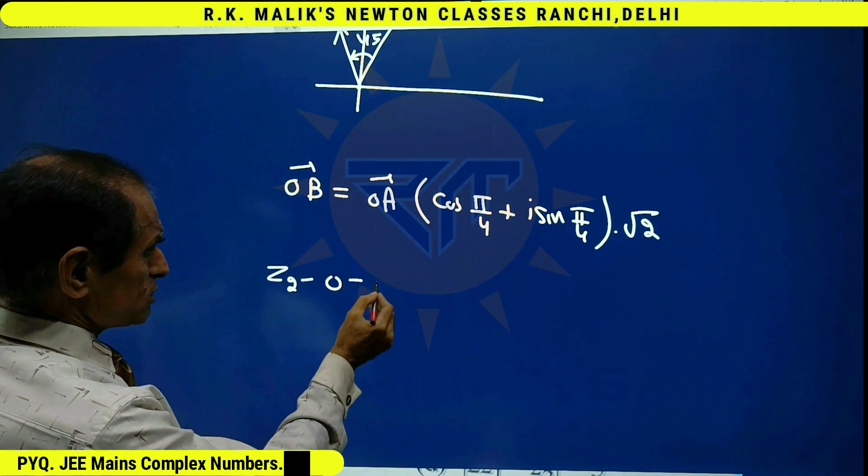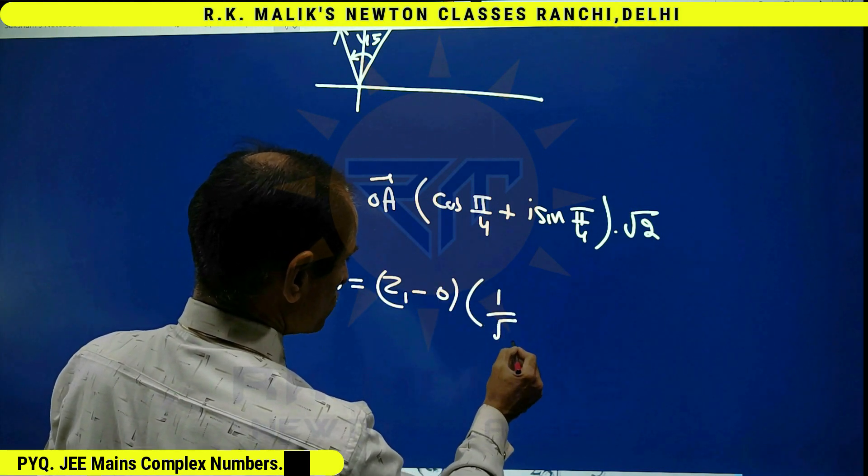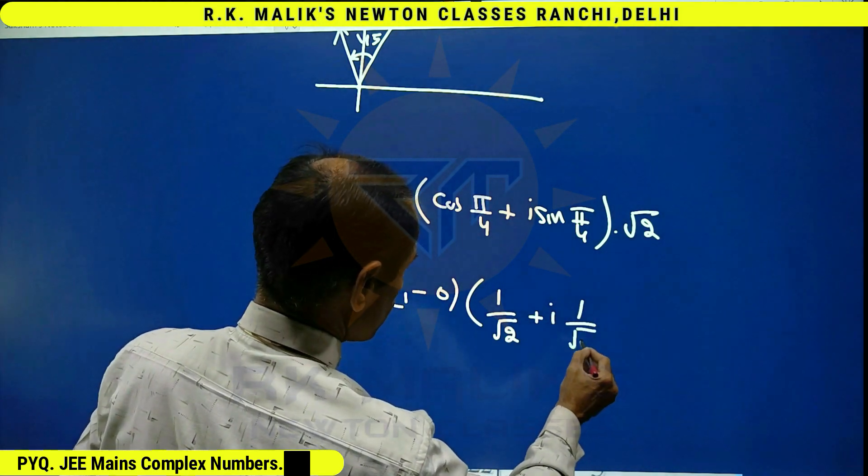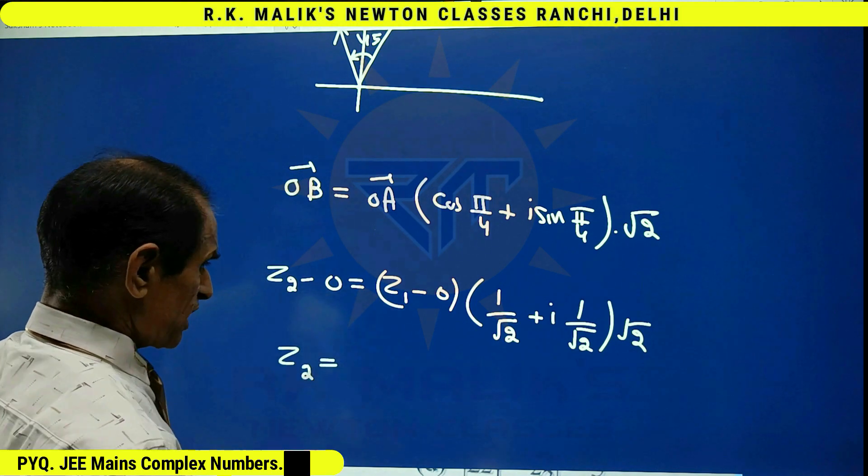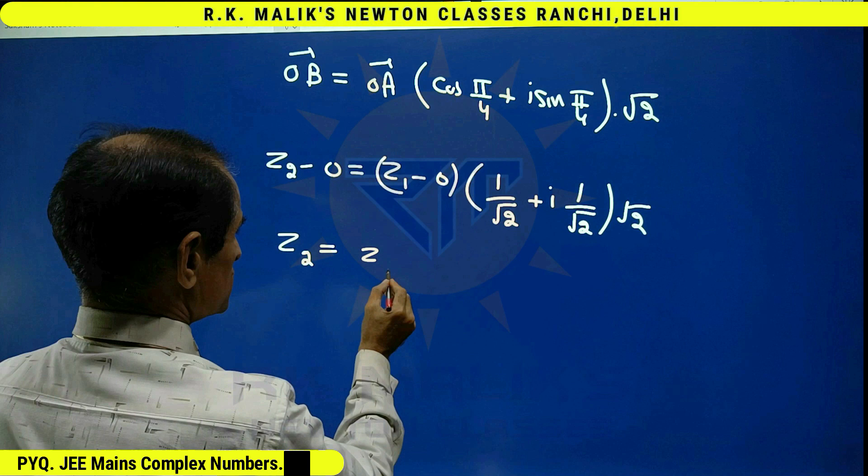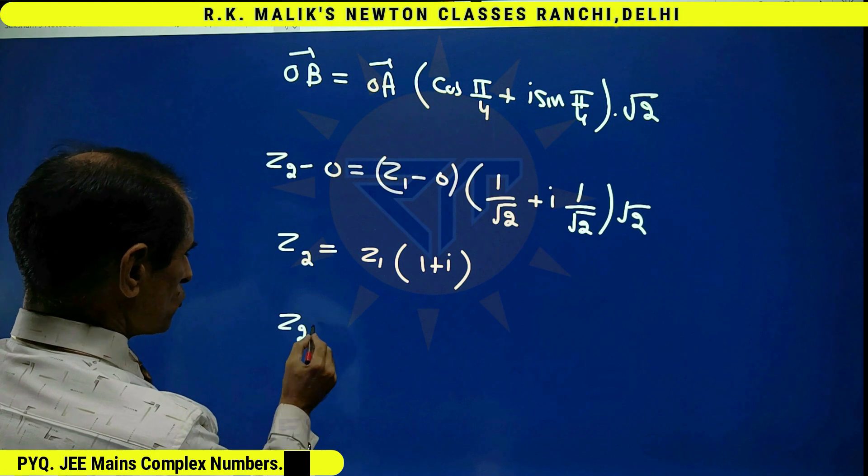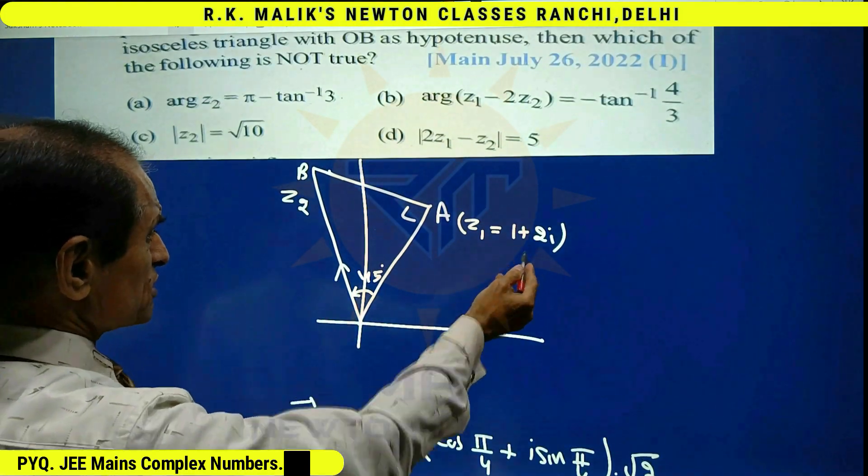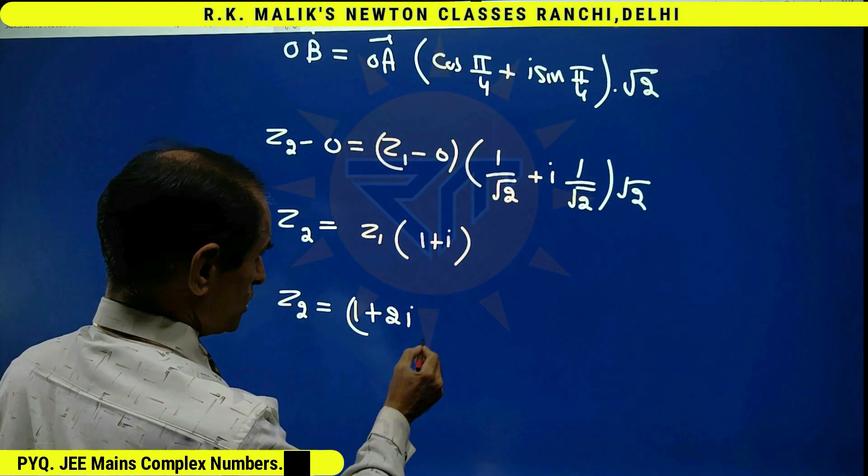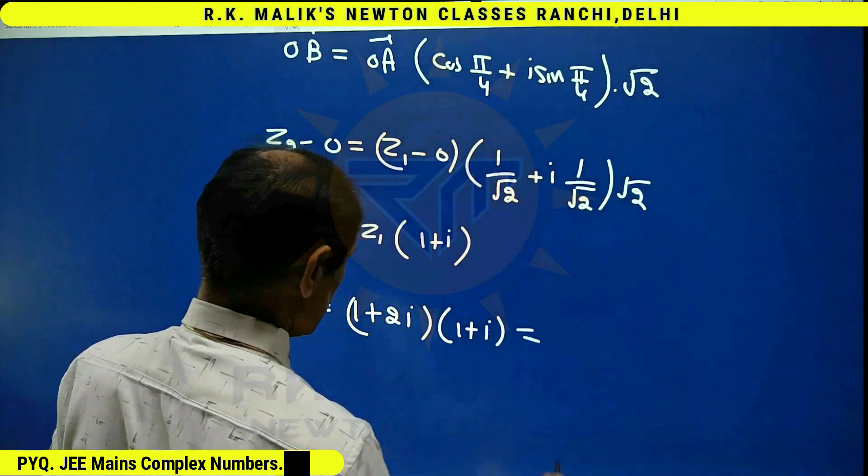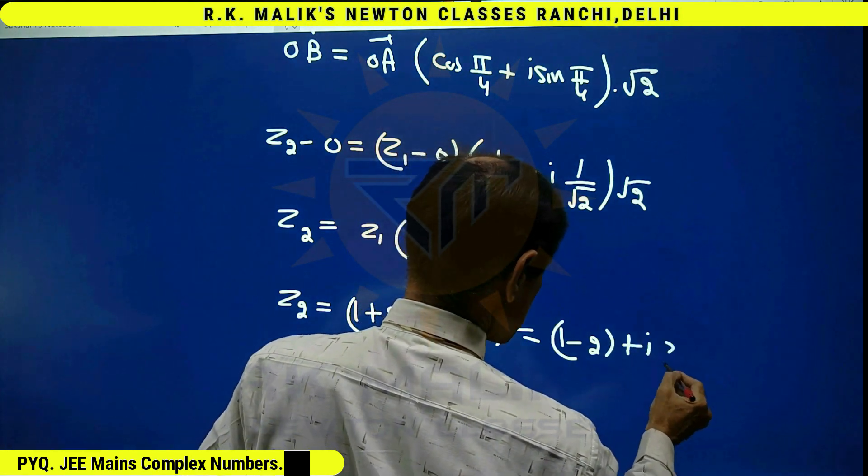And now, z2 minus 0 is equal to z1 minus 0 into 1/√2 plus i into 1/√2 into √2. So, z2 is equal to z1 into (1 plus i). That is z2 equal to, because z1 is given as 1 plus 2i, it is (1 plus 2i) into (1 plus i), that is 1 minus 2 plus 3i. The answer is -1 plus 3i.